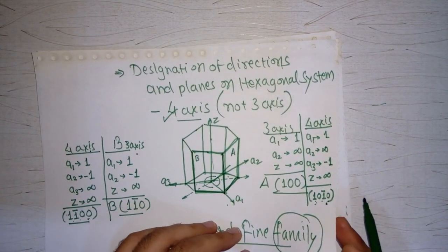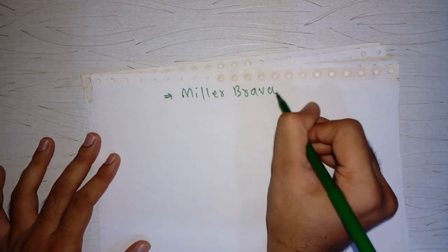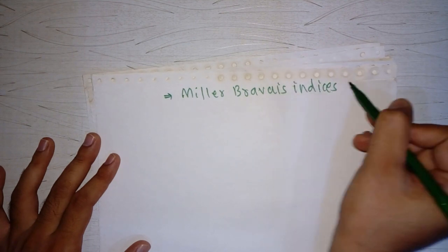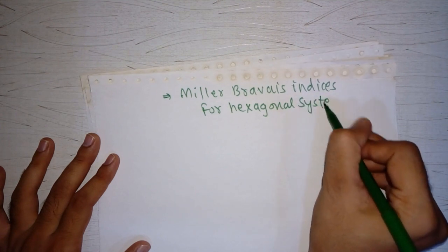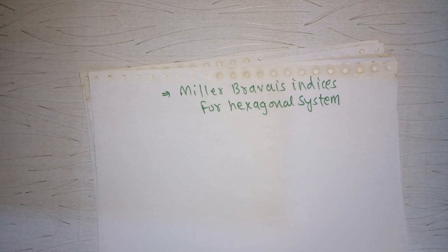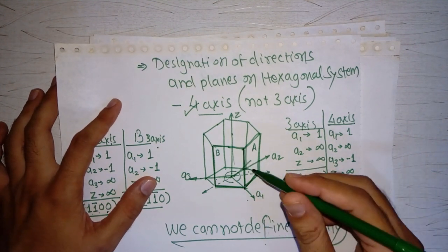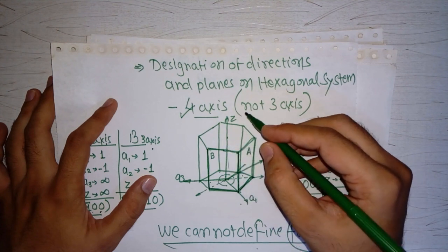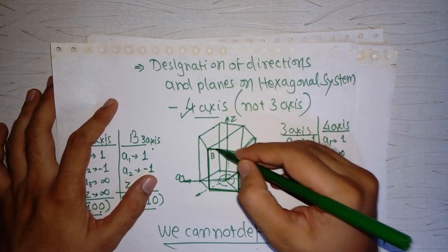This is how designation of directions and planes on the hexagonal system differs from cubic, and this is called Miller-Bravais indices for the hexagonal system. Let's take one more example for designation of a plane on a hexagonal system.